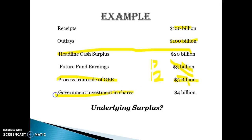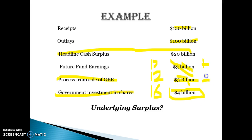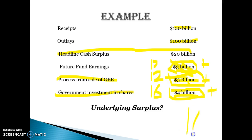Government investment in shares: the government has also invested $4 billion in shares. Do we take it down to $8 billion? No, we don't — because this is actually expenditure by the government, so that expenditure is not included in the underlying rate. The headline rate of $20 billion included the $3 billion in future fund earnings, the $5 billion in GBE proceeds, and had the $4 billion share purchase deducted. To get the underlying rate, we deduct the $3 billion (down to $17 billion), deduct the $5 billion (down to $12 billion), but then add back the $4 billion share purchase because it was already deducted from the headline. So the underlying surplus is actually $16 billion.